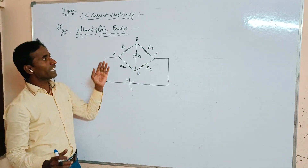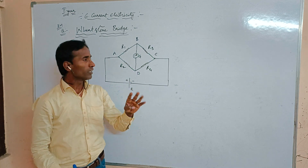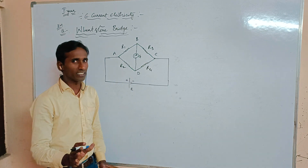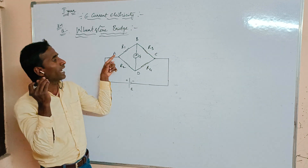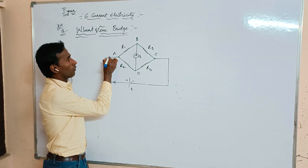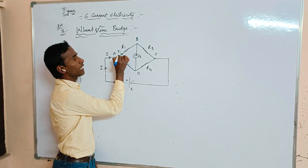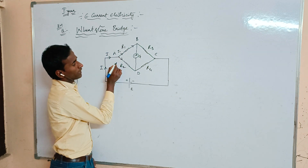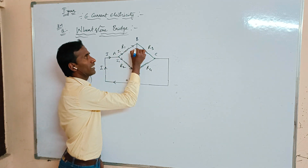The bridge consists of four types of junctions: A, B, C, and D. The battery of EMF is connected between two junctions, that is A and C. From this battery, the electric current passes through the circuit. The current is divided into two parts: I1 passes through resistance R1, and I2 passes along resistance R2.